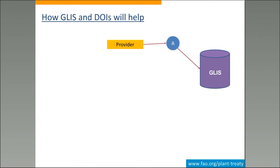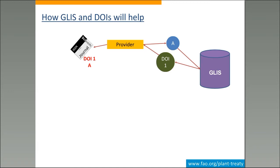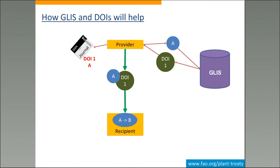So how do we hope to address this problem? We start with the provider that registers material A in GLIS — the global information system — that returns a DOI. This DOI is a digital object identifier and is assigned to material A. When the provider publishes the results, he should mention in the publication the DOI that is assigned to the material. He can also cite his own identifier, but the critical point is that the DOI is mentioned in the publication.